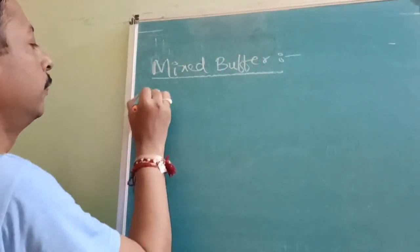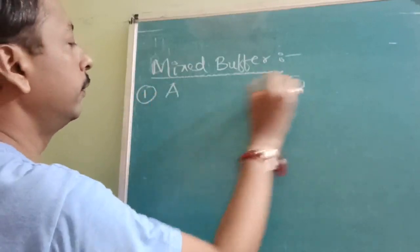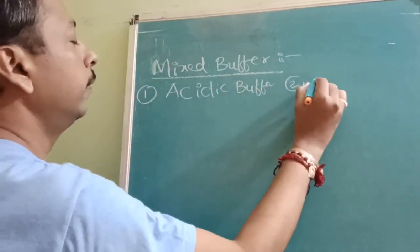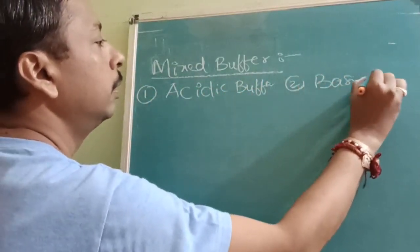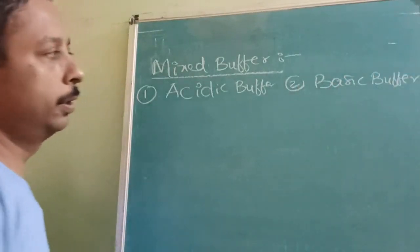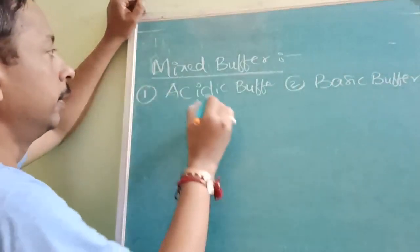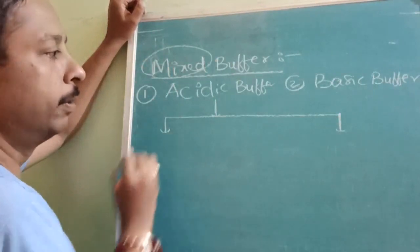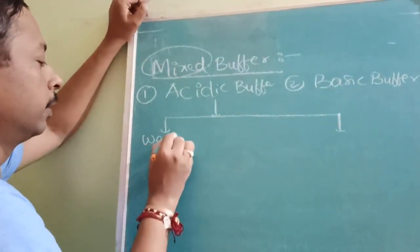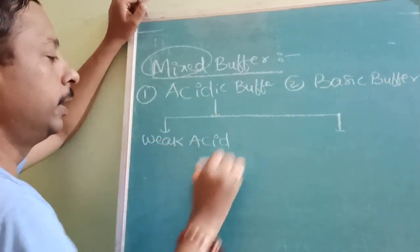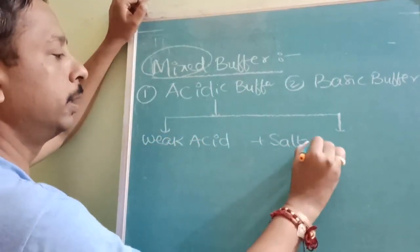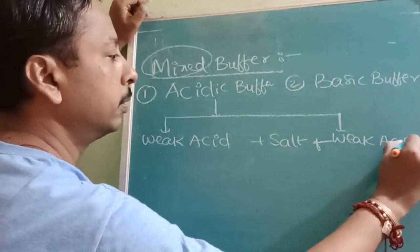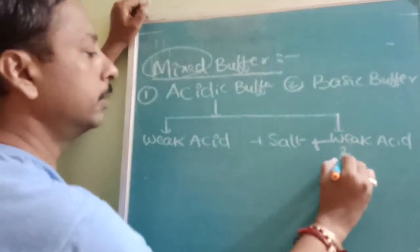Now in the mixed buffer, there are two types: first one is called Acidic Buffer, and second one is called Basic Buffer. Acidic buffer is a mixture of a weak acid plus a salt — but that salt must be a salt of weak acid and strong base.